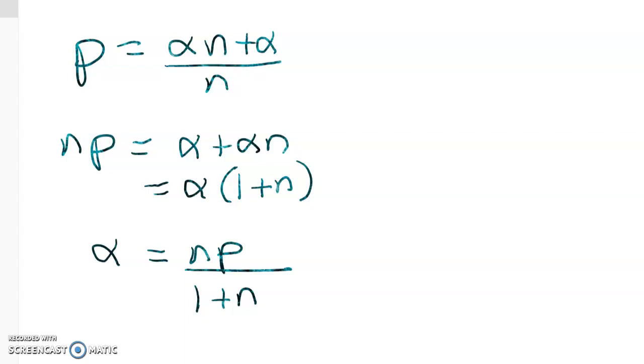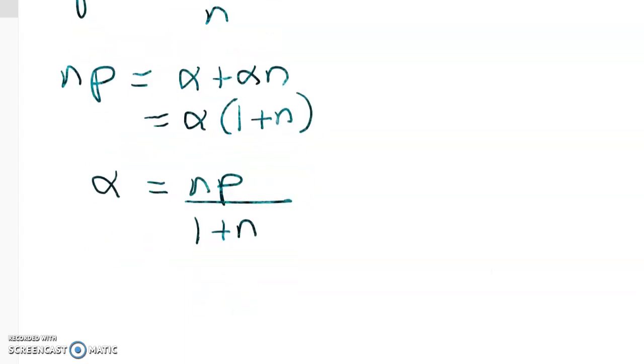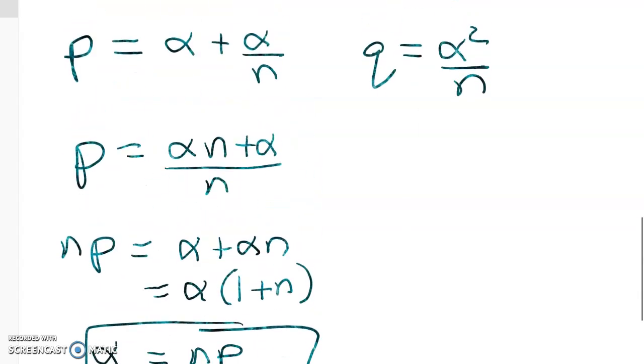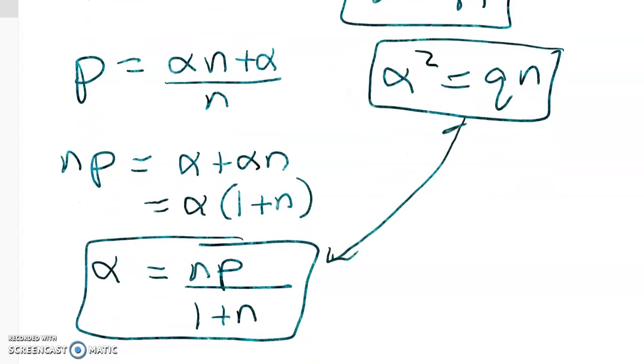Well I want to have a thing in the end that's got no alphas in it. And I can get alpha equal to something from this equation, and then I can get alpha equal to something from this equation, or actually here, I'm going to get alpha squared. So on this side, we get alpha squared is equal to qn.